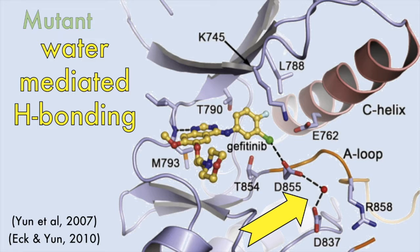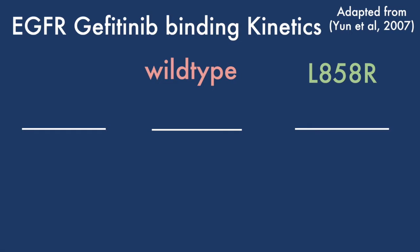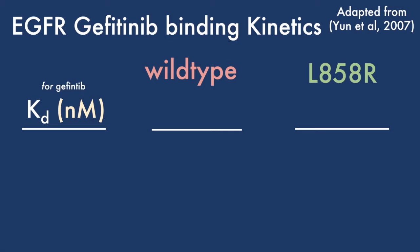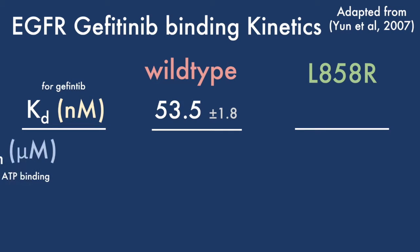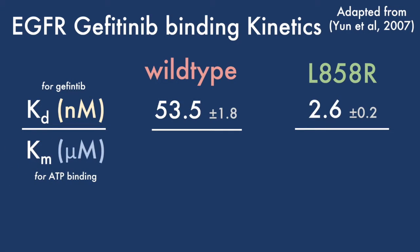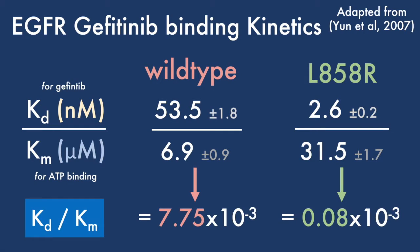These hydrogen bonds increase the affinity of gefitinib for the L858R mutant compared to the wild-type receptor, decreasing the dissociation constant. The conformation of the mutant also gives it a decreased affinity for ATP compared to wild-type EGFR, as indicated by the higher Michaelis-Menten constant for L858R. Thus, gefitinib inhibits L858R mutants more potently than wild-type enzymes. This is reflected by KD over KM values, with lower values representing increased inhibition potency.